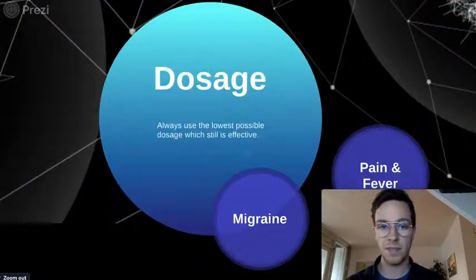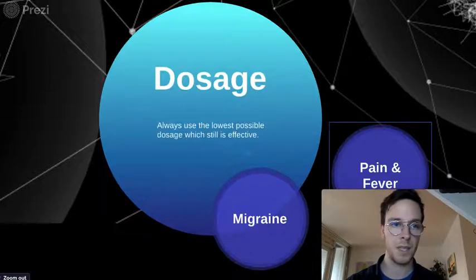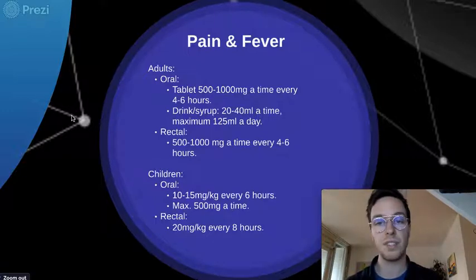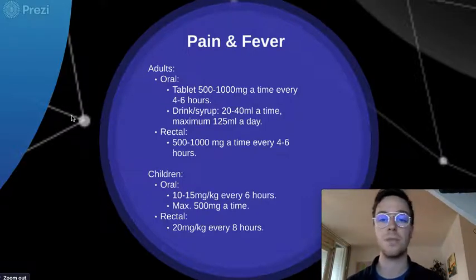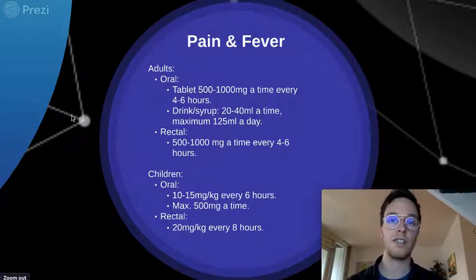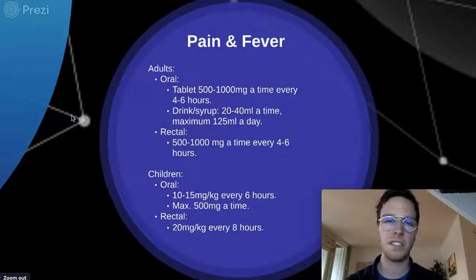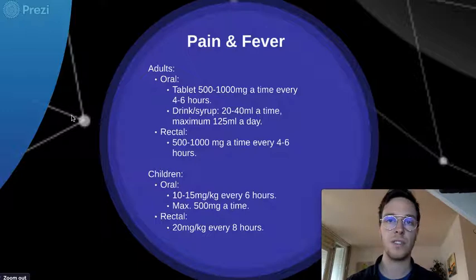How much do you need to use? Always use the lowest possible dosage which is still effective. When experiencing pain or fever and you want to use paracetamol orally, you can use tablets from 500 to 1,000 milligrams at a time, every 4 to 6 hours. For a drink or syrup, use 20 to 40 milliliters at a time, to a maximum of 125 milliliters a day. If you no longer feel pain or have no fever, it's not necessary to continue — you can stop at any time.